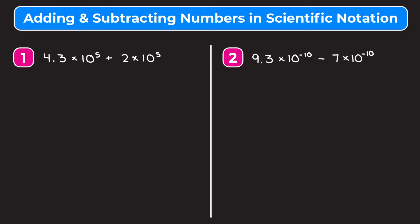Now if both of your numbers in scientific notation are being multiplied by 10 to the same power, adding and subtracting them is pretty easy. We can just add the two numbers in front. The reason this works is because both of our numbers 4.3 and 2 are being multiplied by 10 to the fifth. So what we can do is pull out a 10 to the fifth — factor it out — and we're left with 4.3 plus 2.